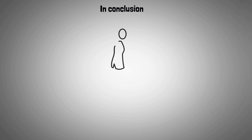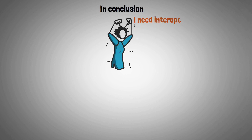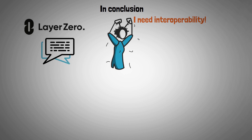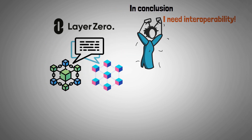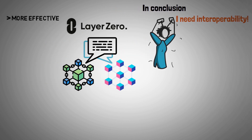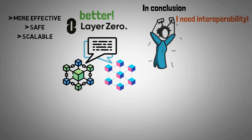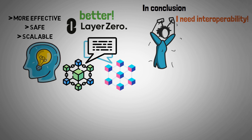In conclusion, one of the most important issues in the blockchain space is addressed by Layer 0, which facilitates smooth communication between various blockchains. It offers a more effective, safe, and scalable solution than conventional blockchain bridges, thanks to its creative use of unique ecosystem components.